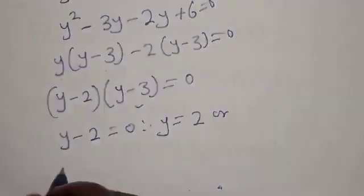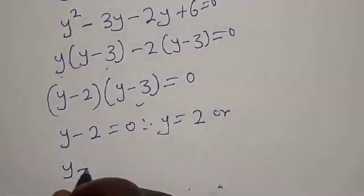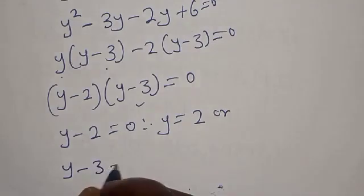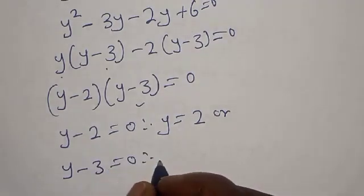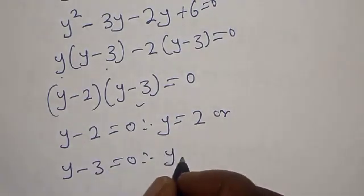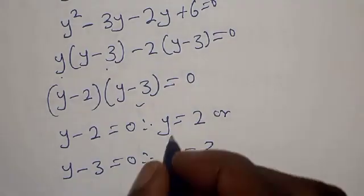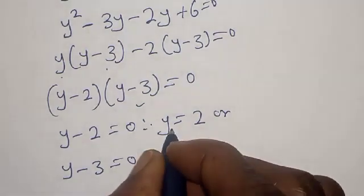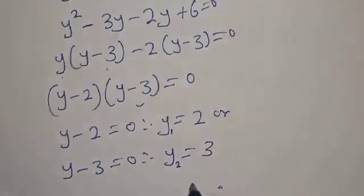From here, y minus 3 is equal to 0, therefore y is equal to 3. Let's call this y1. And y minus 2 is equal to 0, therefore y is equal to 2 — let's call this y2.